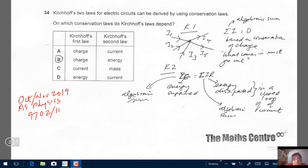Hi, welcome to themathscentre.com. In this video we will look at question number 34 which appeared in the October November 2019 AS physics exam, subject code 9702 paper 11.